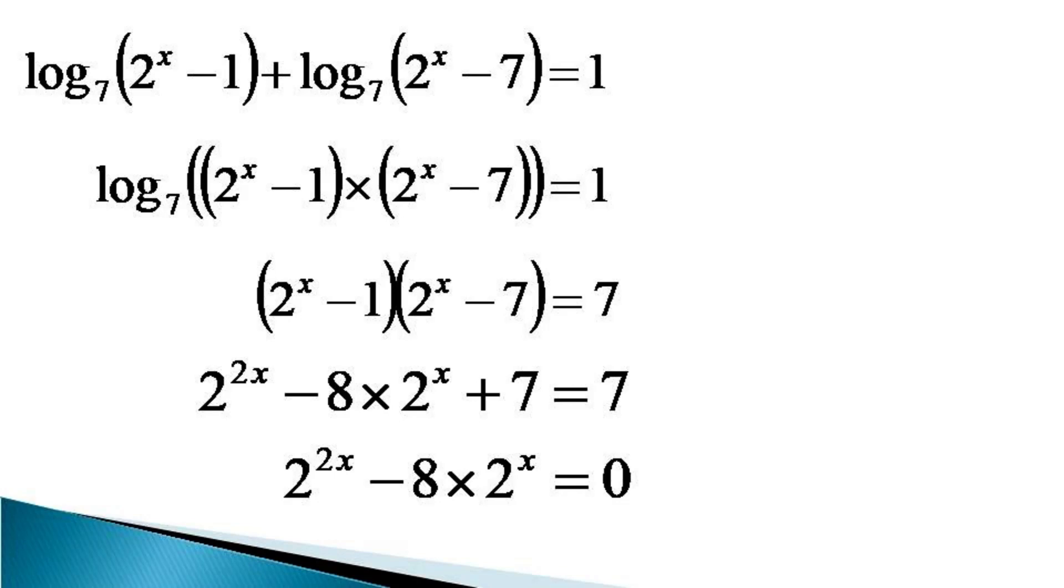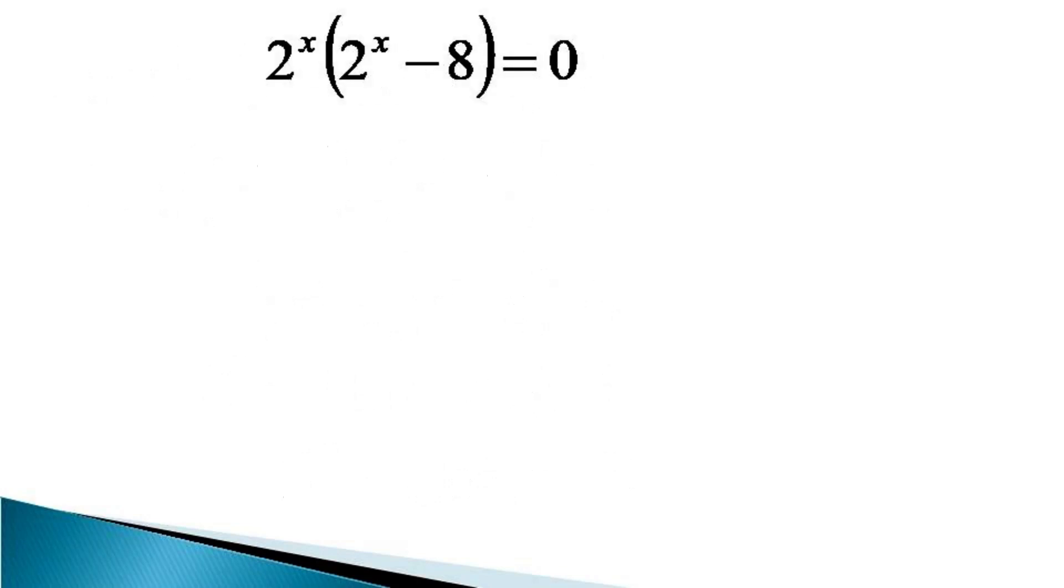2^x can be taken common in this equation. And we get 2^x × (2^x - 8) is equal to 0.